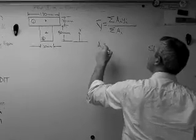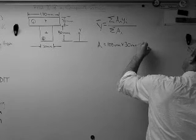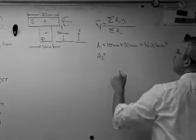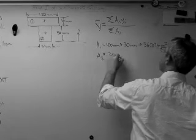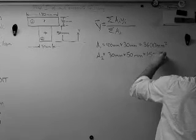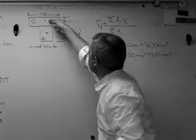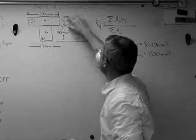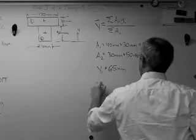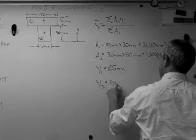So a1 is going to be 120 millimeters times 30 millimeters, and that's 3,600 millimeters squared. a2 is going to be 30 millimeters times 50 millimeters, and that gives me 1,500 millimeters squared. y1 is the distance of this point right here from the bottom, so it's 50 millimeters plus half of 30. If you add that up, you get 65 millimeters. y2 is going to be just that distance right there, half of 50. That's 25 millimeters.